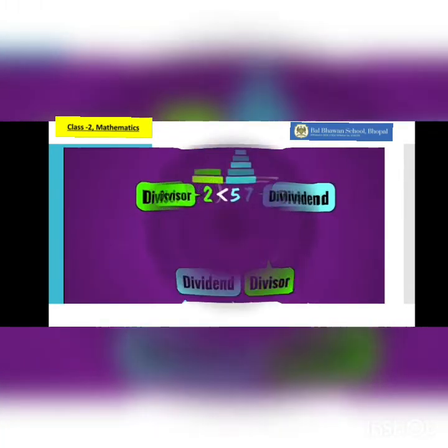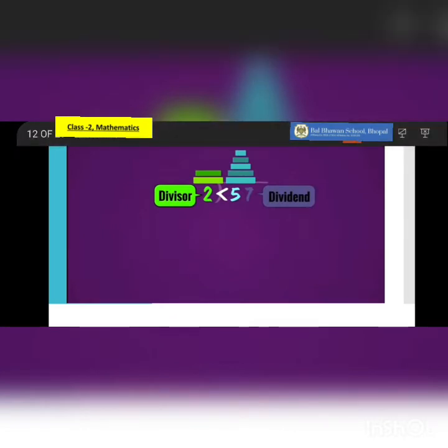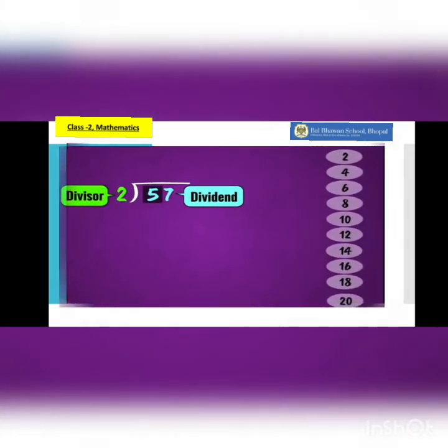The first step is to compare the divisor with the dividend. With a big number we should take the tens place first. At tens place 5 is there, so let's take 5 first and we need to compare. That is step number 1: compare. Can you see the sign of comparison here? 5 is greater than 2.